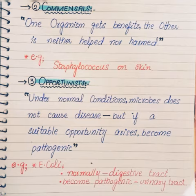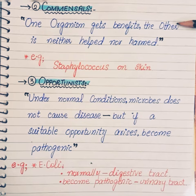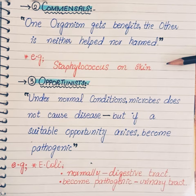Second, we have commensals, which means one organism gets benefit but the other is neither helped nor harmed. For example, Staphylococcus on the skin neither gets benefit nor is harmed.